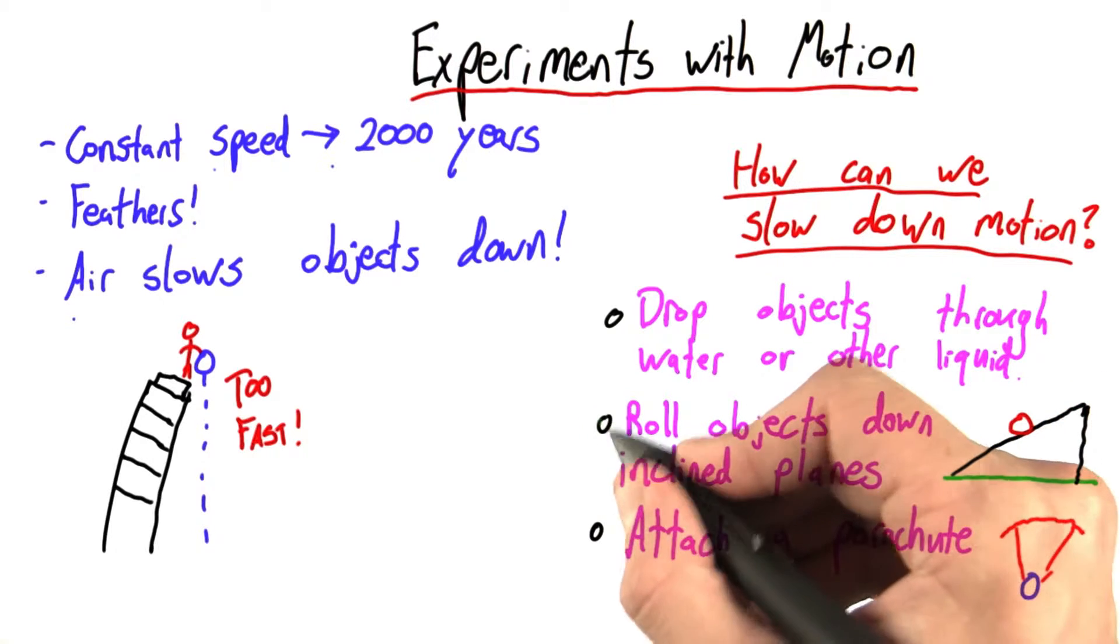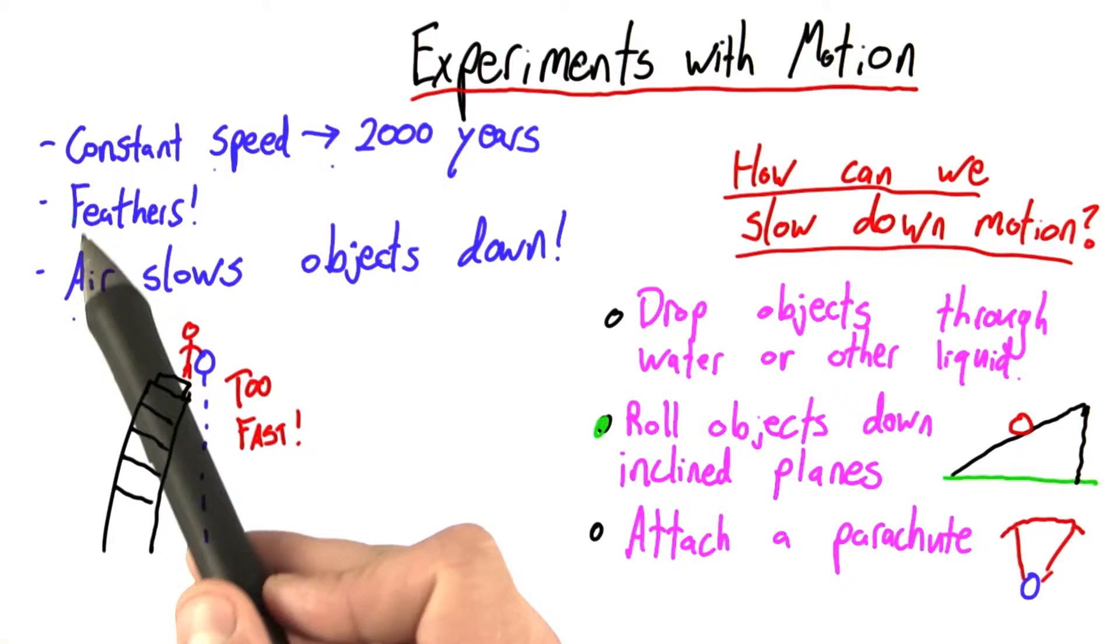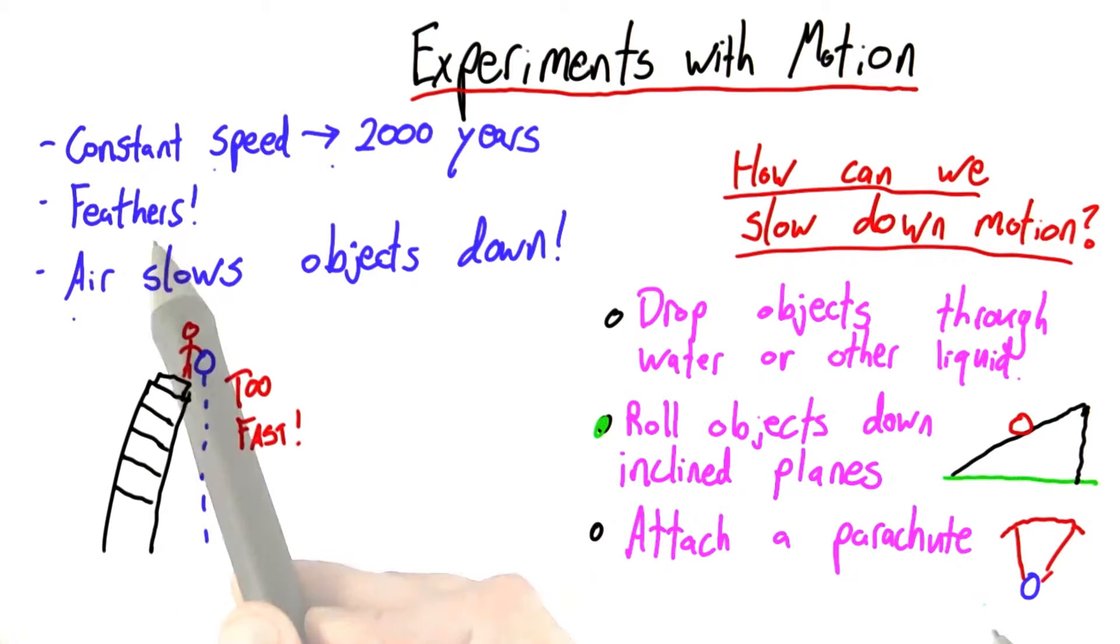And the best answer is to roll objects down inclined planes. The reason why this isn't a great answer is because attaching a parachute is essentially doing the same thing as we do when we drop a feather. We're just making a big bag to catch that air and to slow the object down artificially. We're not observing its natural motion.